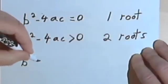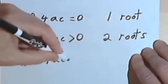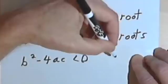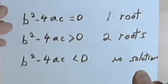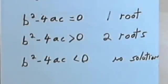If b squared minus 4ac is less than zero, there's no solution, no real root. And that's really all there is to this.